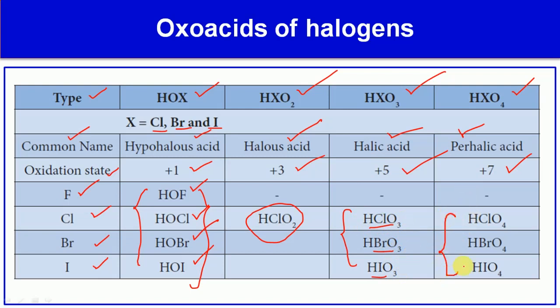The perhalic acids are: perchloric acid (HClO4), perbromic acid (HBrO4), and periodic acid (HIO4). In perhalic acids, the oxidation state of the halogen is +7.